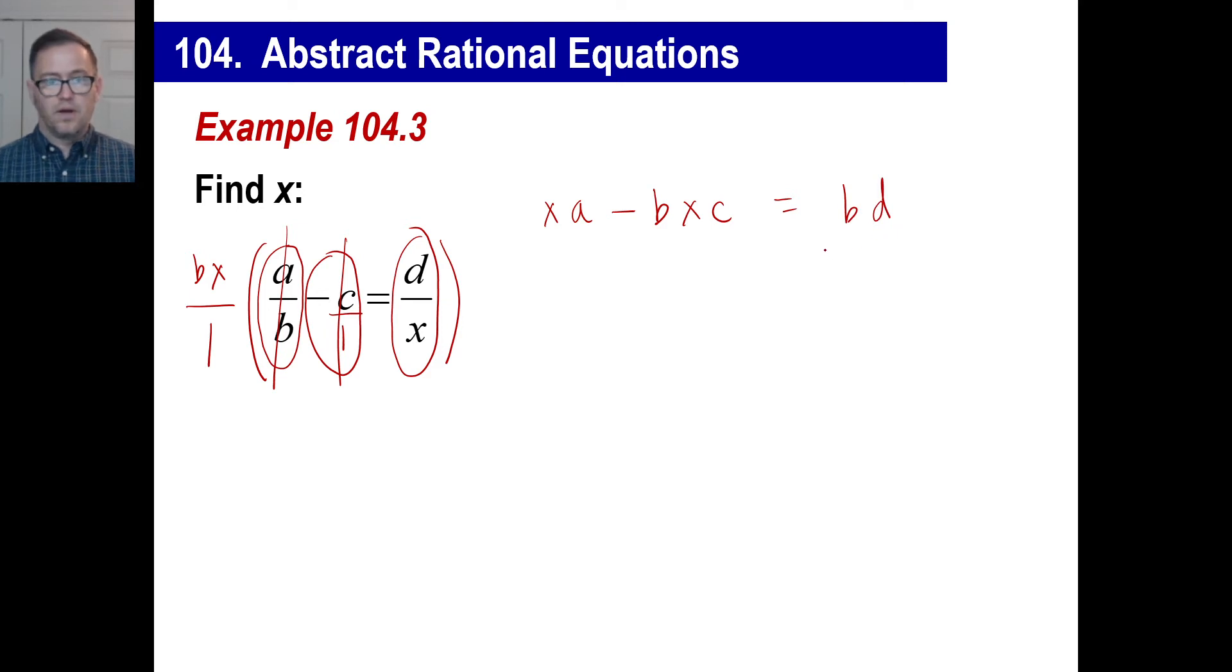The X's, right? The X's cancel. So we have equals B times D. They want us to find X. Wow. Okay. This is, this is set up nicely. Because all the X's are already over there for us. All right.